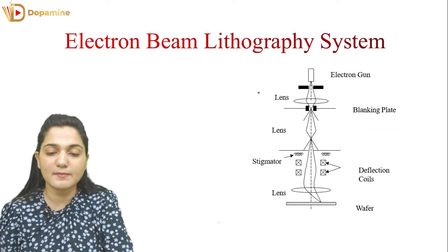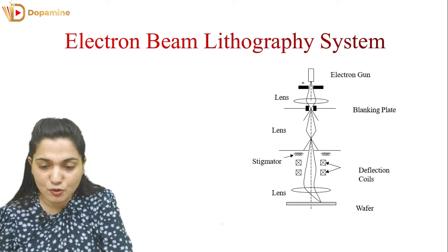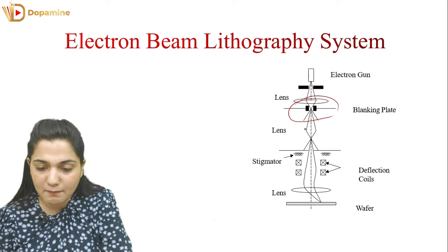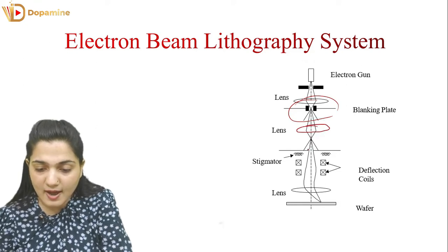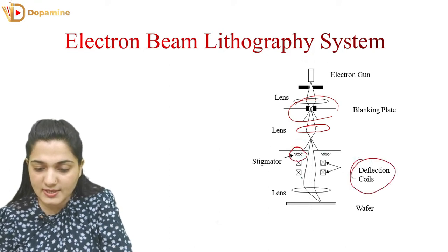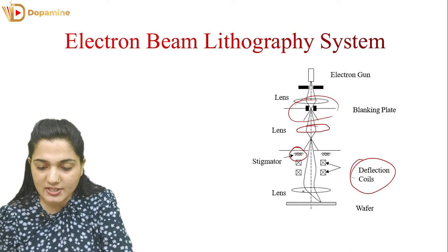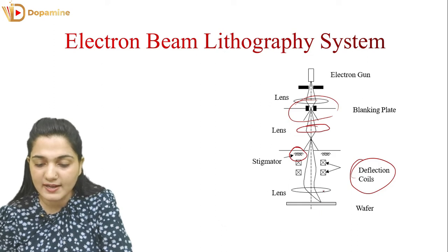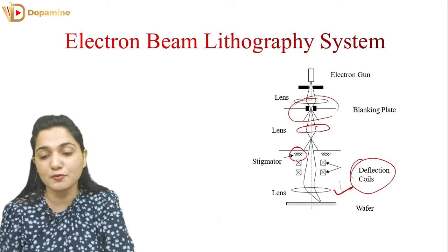This is the Electron Beam Lithography System. Here we have an Electron Gun, and we are using a mask with the help of a lens. We are using a blanking plate through which the Electron Beam passes. Then we use a converging lens to converge the Electron Beam. Then we use a Stigmator and Deflection Coils in which the beam gets a desired direction according to the pattern. We then focus it with the help of one more lens.